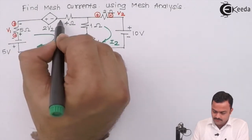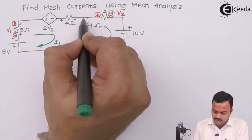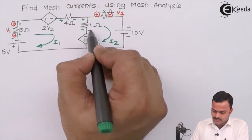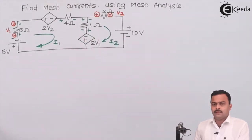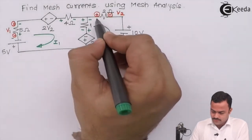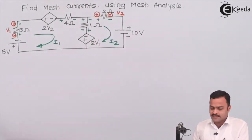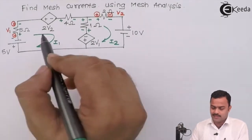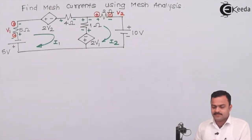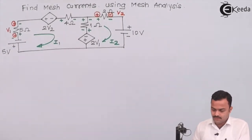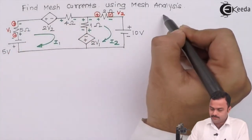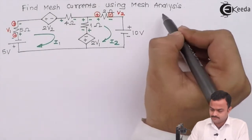I1 flowing through the four-ohm develops plus-minus polarity, and similarly for the one-ohm. I2 will develop its polarity accordingly. For the two-ohm as well, it is plus-minus. So for the five-ohm and the two-ohm, there are two voltage polarities present: one given by them and the second developed by our loop currents. Since a closed loop and current are present, we are ready to apply KVL to mesh number one.